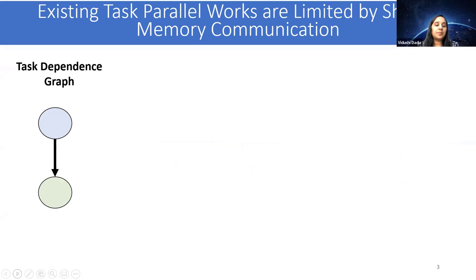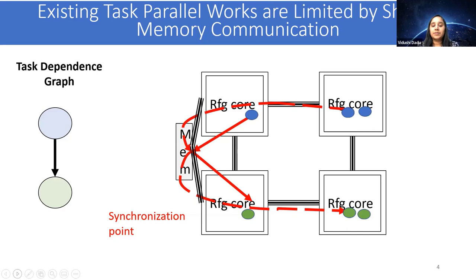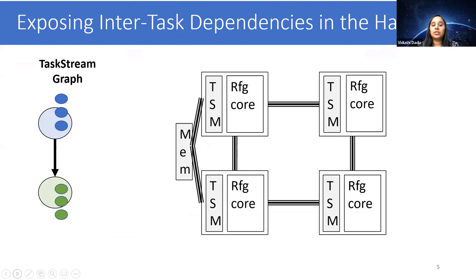On traditional multi-core reconfigurable hardware, different instances of these task types would be scheduled at the cores, while they would communicate via shared memory. The synchronization via shared memory often becomes a critical bottleneck and hurts performance. Our insight is to expose these inter-task dependencies in the hardware and enforce them using a novel distributed task management system.